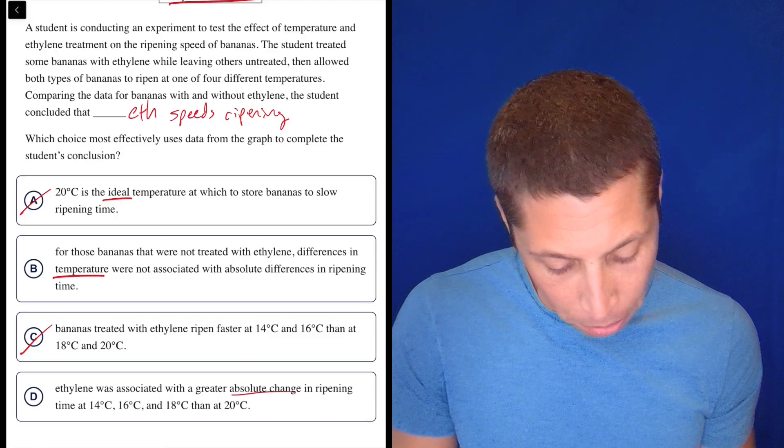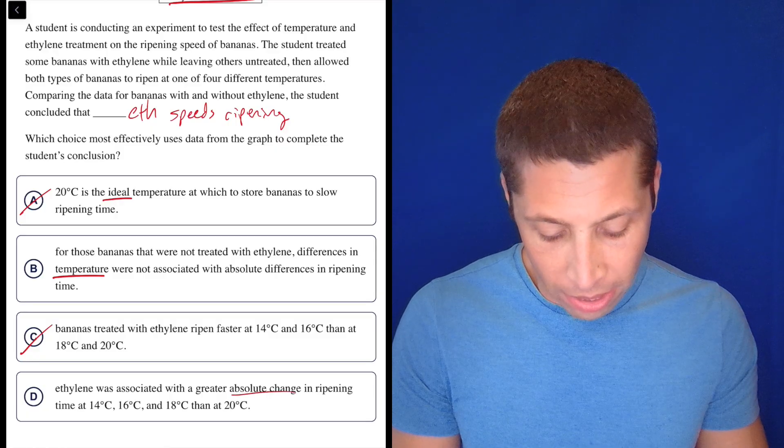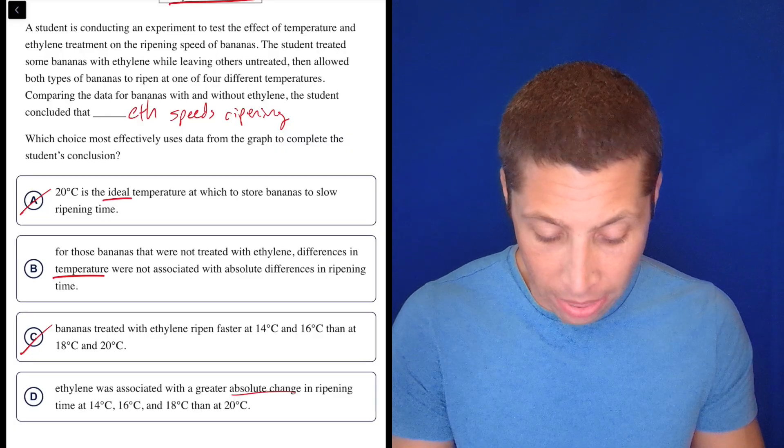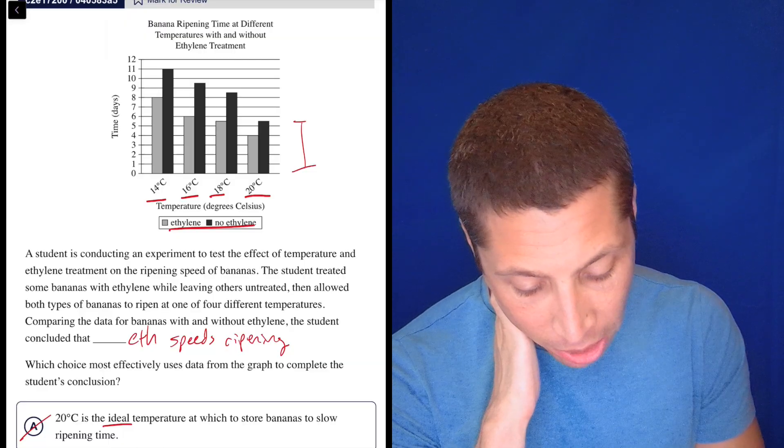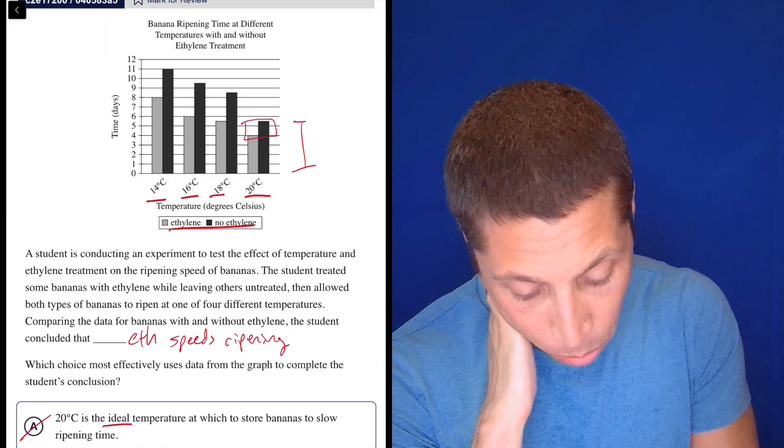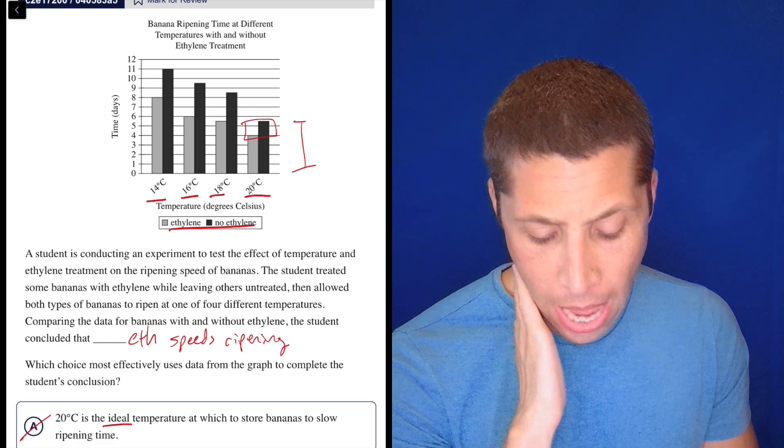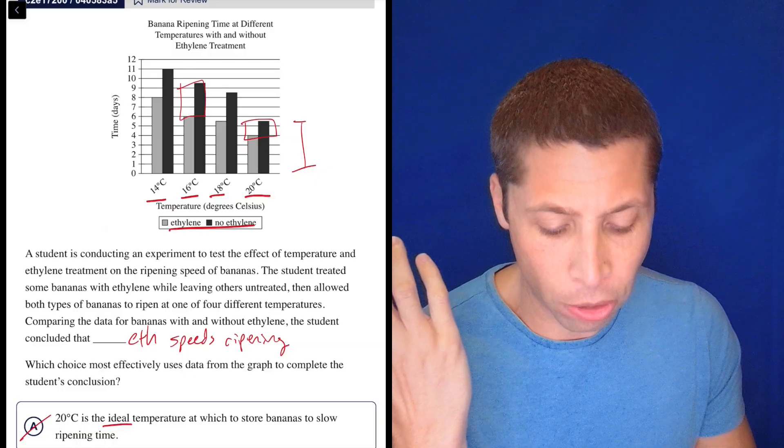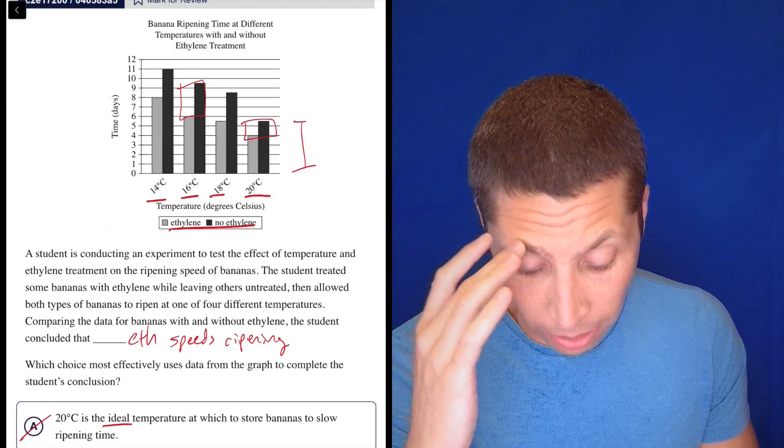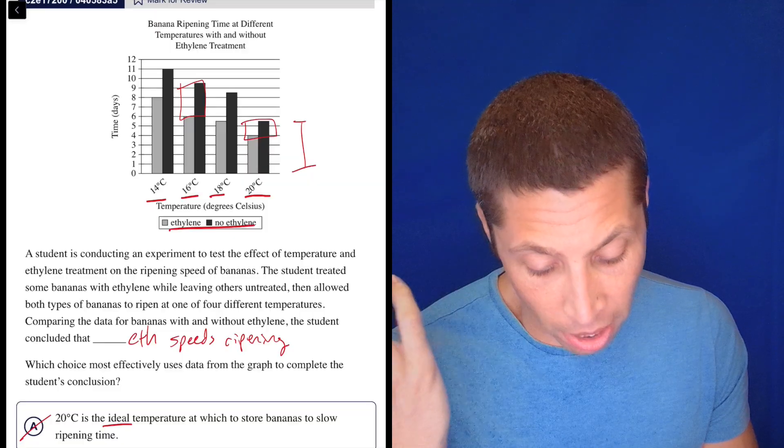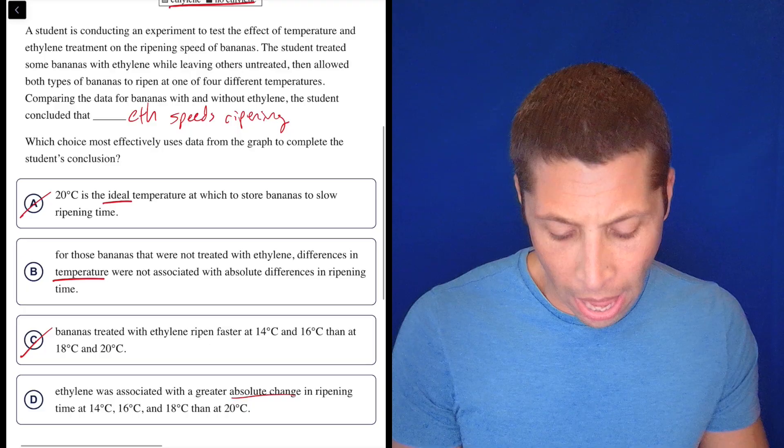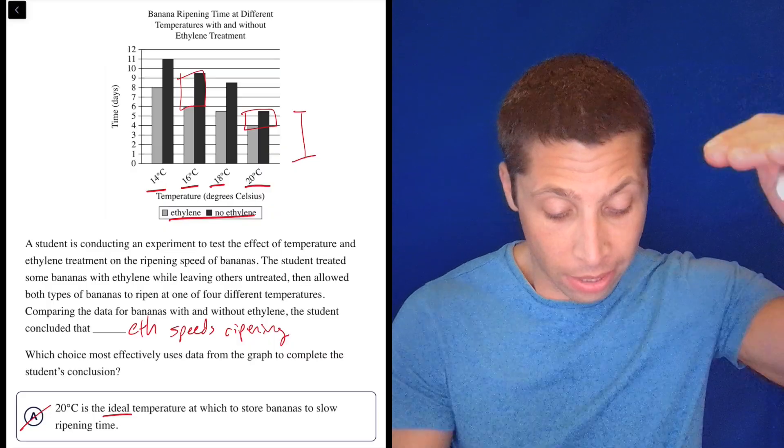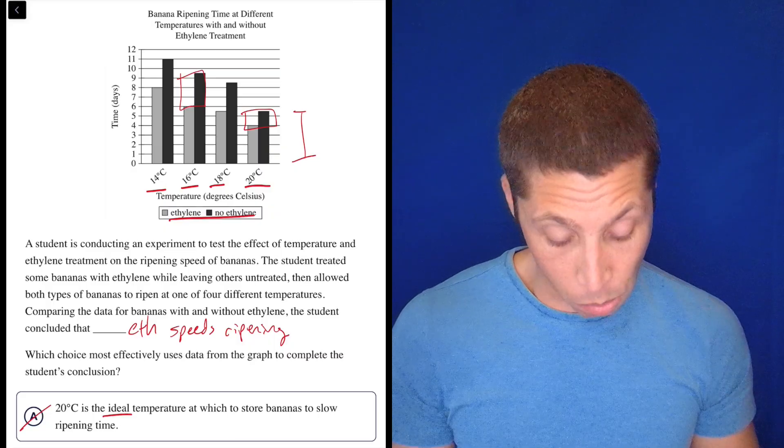D, ethylene was associated with a greater absolute, there's that part again, absolute change in ripening time at 14, 16, 18, and 18, then at 20. So absolute change, I guess I have to kind of understand what this means, right? I didn't think about this at all, but I guess the absolute change is kind of like this distance between the black bar with no ethylene and the gray bar with it, right? So like here, we obviously have a pretty big change based on what the ethylene does, right? That's a change of like three days, whereas at 20 degrees, that's like a day and a half. So the ethylene was associated with a greater absolute change in ripening time, right? So what's the difference between the black bar and the gray bar? It's definitely bigger for 14, 16, and 18 than it is for the 20. So I'm okay with that.